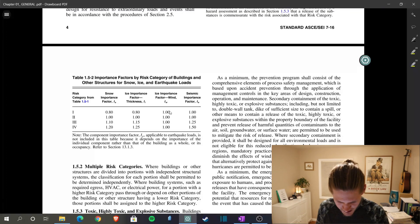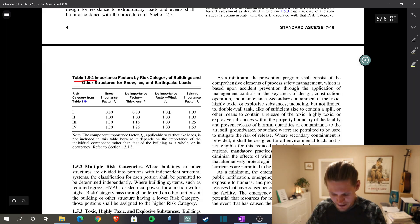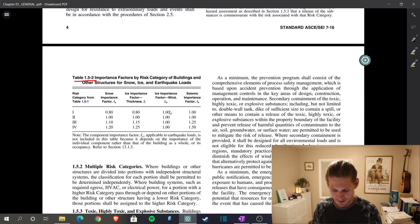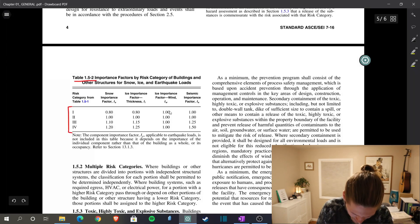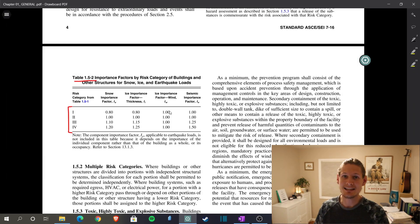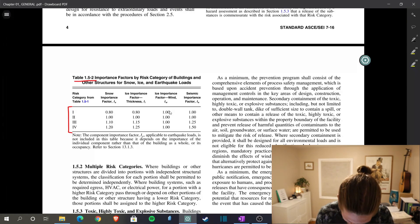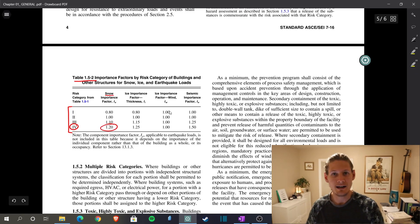Here we are. Chapter one of the 7-16 table 1.5-2 is where we're at, which is importance factors for risk categories of buildings and other structures for snow, ice, and earthquake loads. Well, we're here for snow only. And the kicker here is that you need to know, what is our risk category for our building? And it didn't specifically say that, but it did say that this is an essential facility that we are designing for.